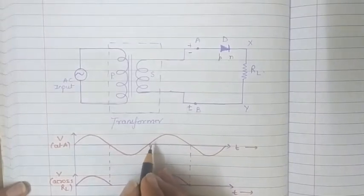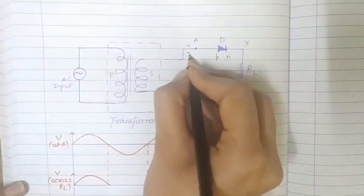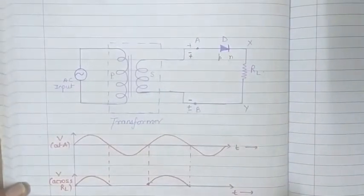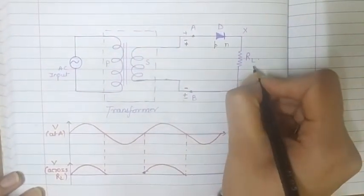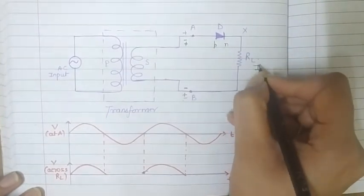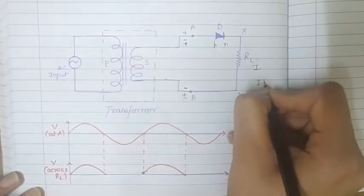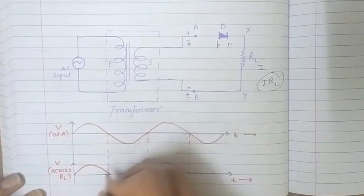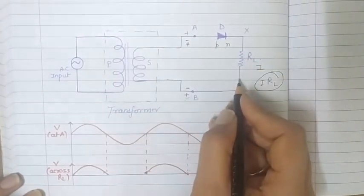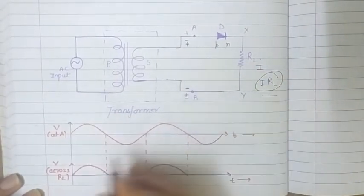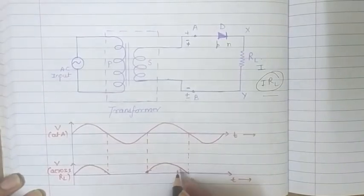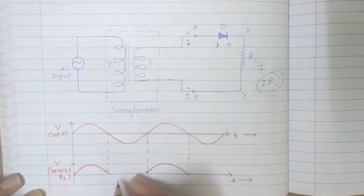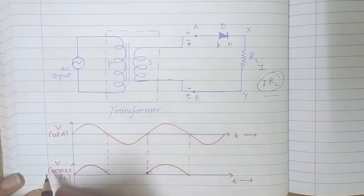Again when we get the positive half cycle, the polarity changes - A positive, B negative - and this diode again becomes forward biased, conducts, and gives us current I in the circuit. The voltage drop across the resistance will be I×RL, which we get as the output. So whenever we are getting the positive half cycle, we are getting voltage drop across RL as current flows through it.